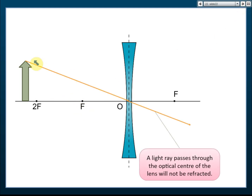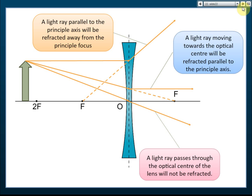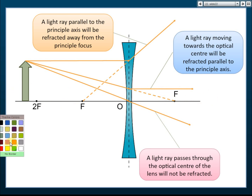Applying the rules: the first rule says the light ray passes through the optical center and will not be refracted. The second rule says a light ray parallel to the principal axis will be refracted as if coming from the other principal focus. Two rules are actually enough, but you can use all three — the third rule: a light ray moving toward the principal focus will be refracted parallel to the principal axis.